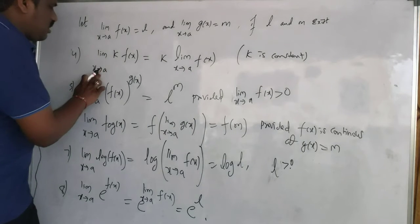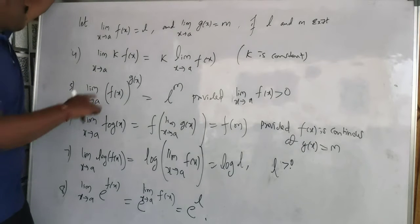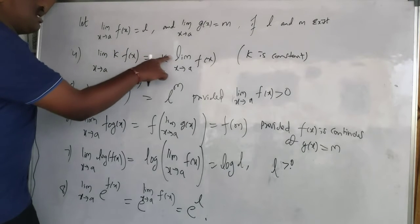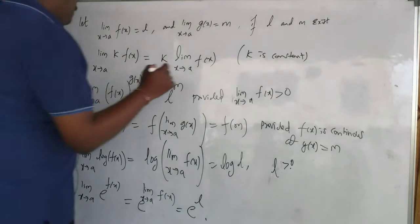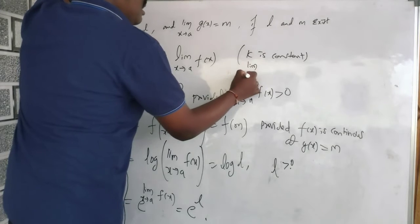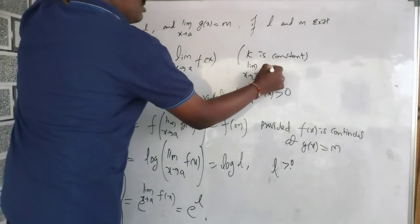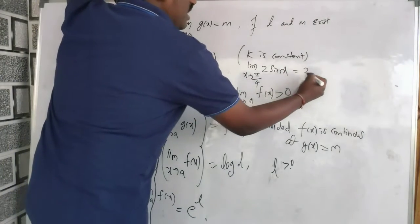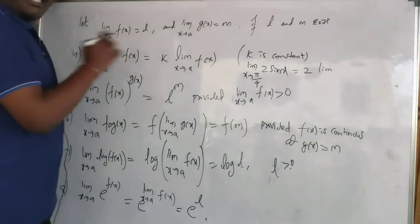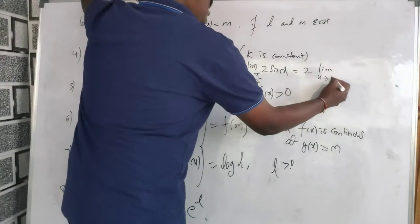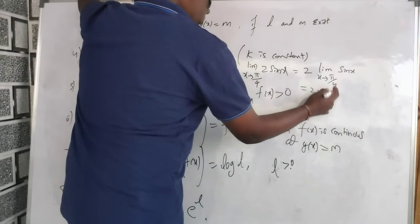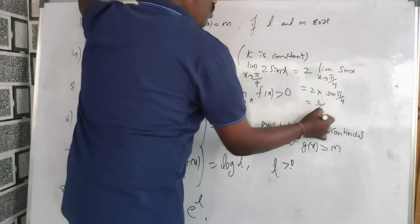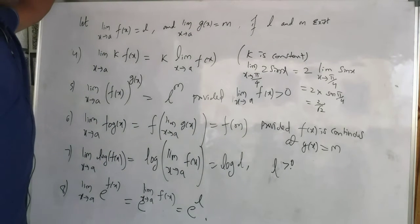The fourth rule: limit extending to a of k·f(x). Whenever you have k·f(x), this k is a constant, k can come out. I can write it as k into limit extending to a of f(x). For example, limit extending to π/4 of 2·sin x. The 2 is a constant, I can take it out from the limit. So, 2 into limit extending to π/4 of sin x — substitute: 2 into sin(π/4). Sin(π/4) is 1/√2, so we get 2/√2, which simplifies to √2.